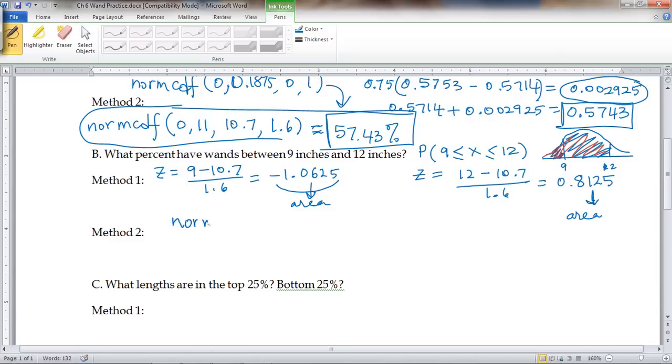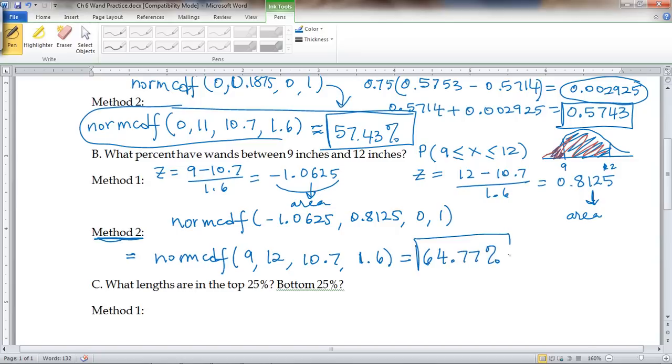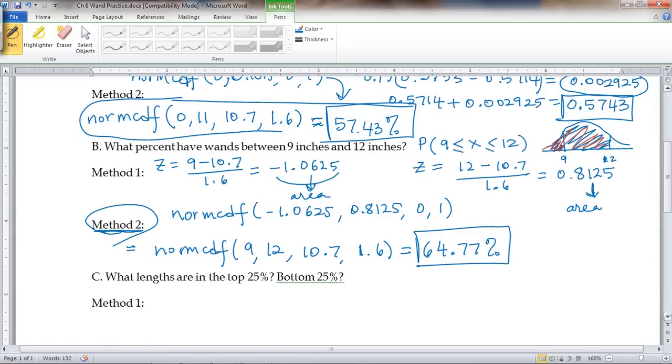Now it's pretty tedious to find the areas using the table, because you've got to look between negative 1.06 and negative 1.07 and then do 25% more and all that business. So using the tables takes a little bit of time. If you have the z-scores, you can use the normcdf function going from negative 1.0625 to 0.8125 with mean 0 and standard deviation 1. Or you could just use, from the beginning, normcdf going from 9 to 12 with a mean of 10.7 and a standard deviation of 1.6. Once you do that, you get 64.77%.